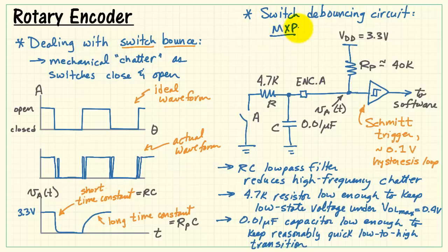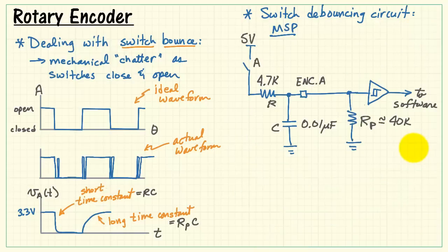We can also adapt this circuit for use on the MSP side with its internal pull-down resistor. Flip this around. Now, instead of connecting the resistor to ground via the switch, we need to connect it up to 5 volts.